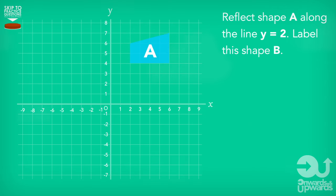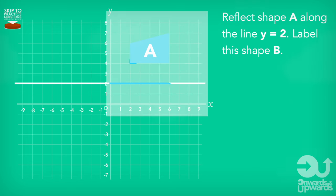Now, in order to do this, we need to draw the reflection line on the graph, and we do this at the point where Y equals 2. Then we copy out the reflection line and shape A onto tracing paper.